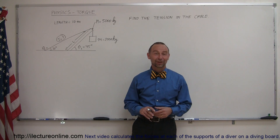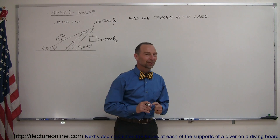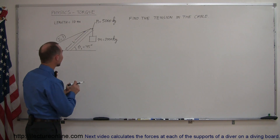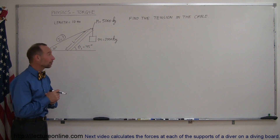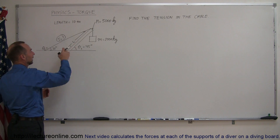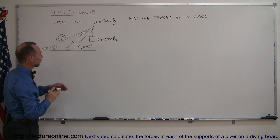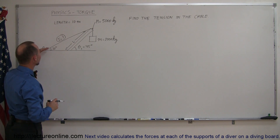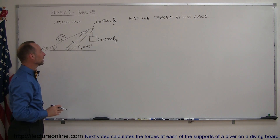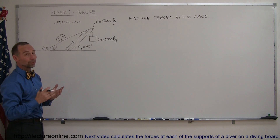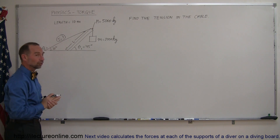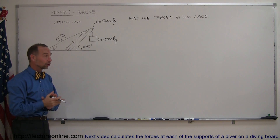Welcome to our lecture online. Here's our third example of how to deal with torque — another physics problem. Let's take a look at our problem here. You can see that we have a beam angled at 45 degrees with the horizontal. We have a cable attached to the end of the beam, and a weight hanging down from the edge of the beam. You're supposed to find the tension in this cable. That is an obvious torque problem.